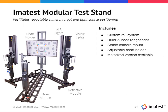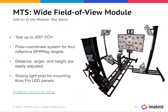At medium range, we have a product called the Imatest Modular Test Stand (MTS). This is a target and camera alignment system with light source alignment. It uses rails to adjust the distance between camera and chart up to 3.5 meters, with a chart holder and light stands that can be positioned and locked down. There is also a motorized version that automates distance changes and tilt, pitch, and yaw. This is a good solution for measuring up to 3.5 meters. If you need to go beyond 3.5 meters, there are longer range test solutions available.